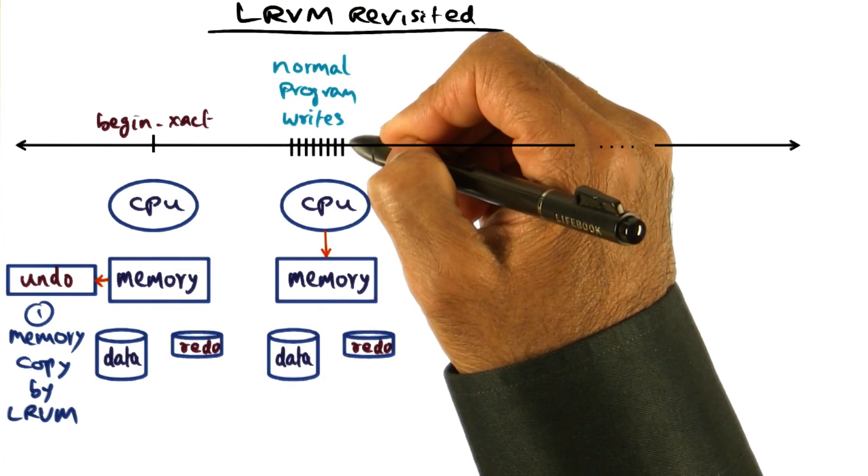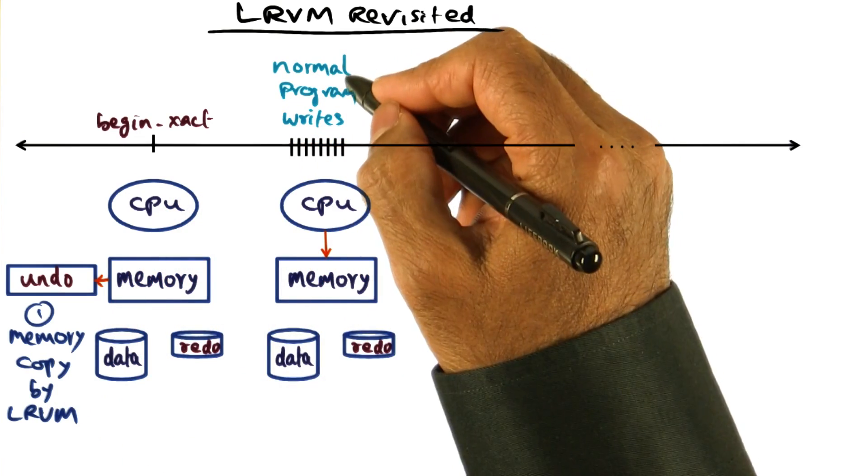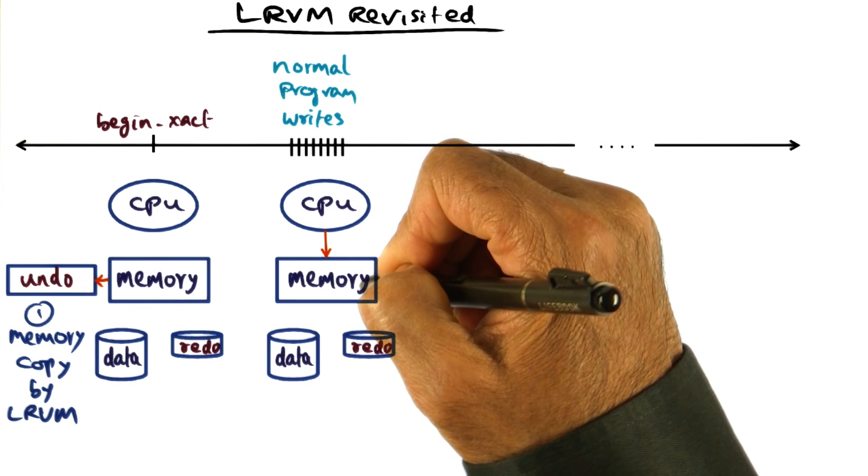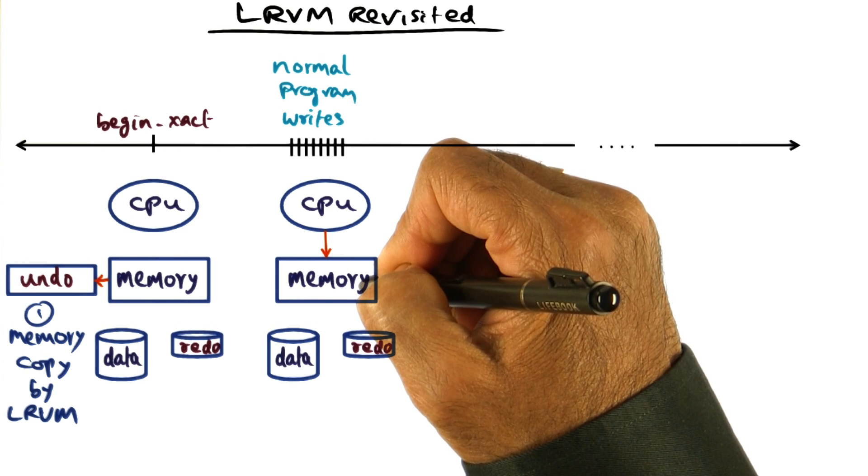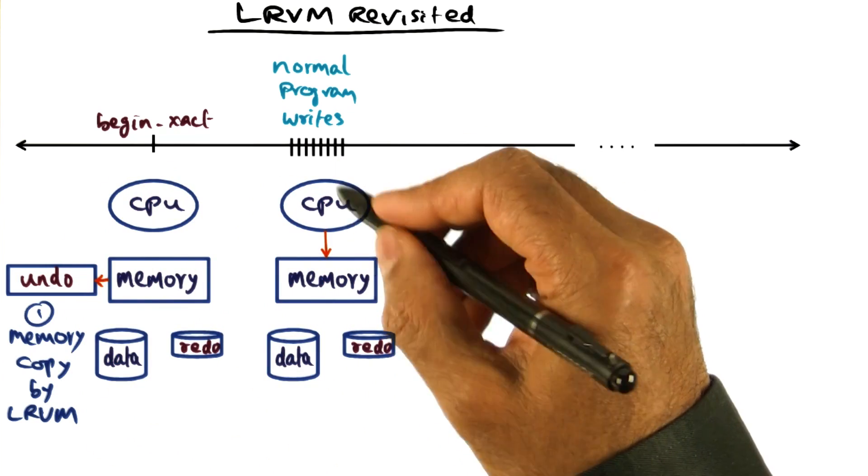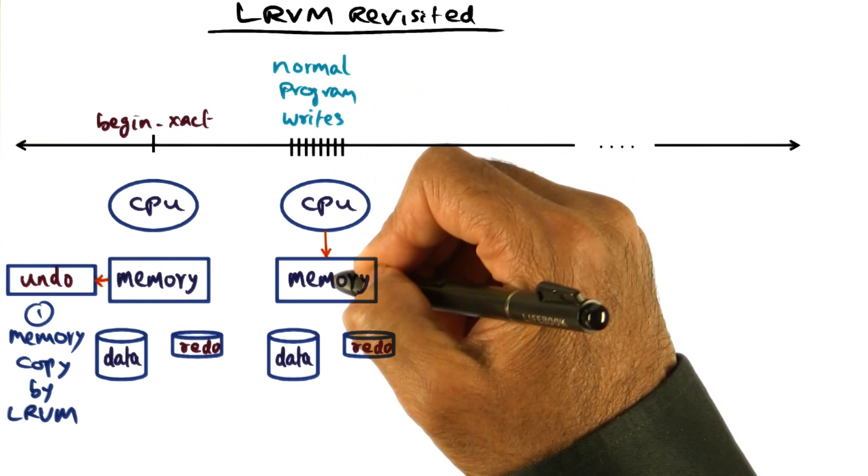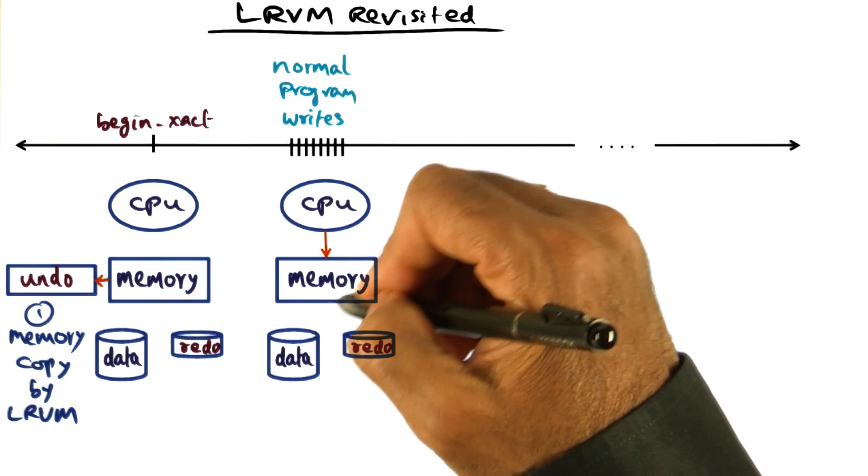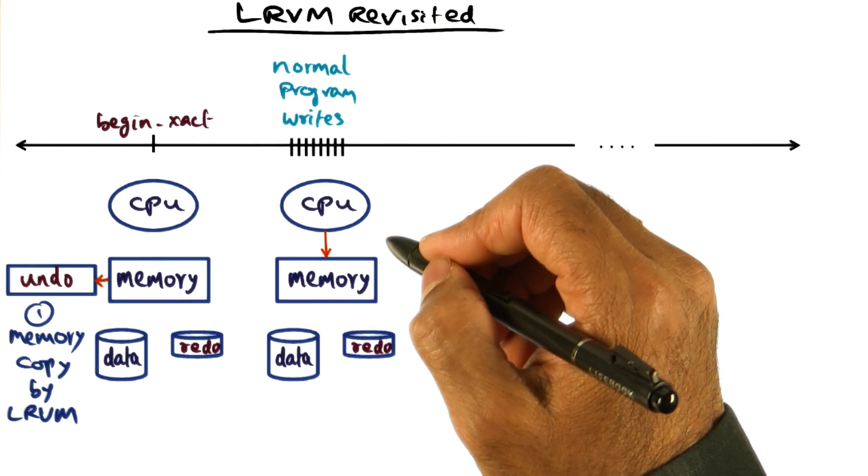In the body of the transaction, the program is doing normal program writes and they're going into the memory. No problem with that because LRVM has the undo record already stashed away. So all of these are writes to normal memory and there is no interaction with LRVM during this portion of the transaction code.